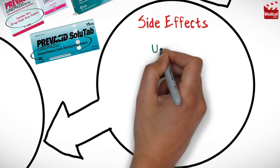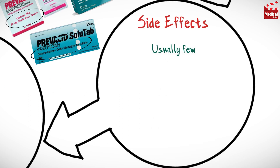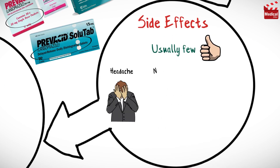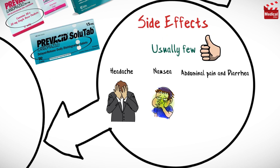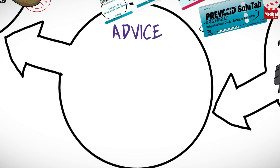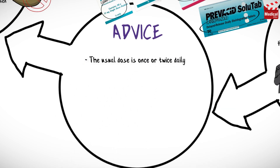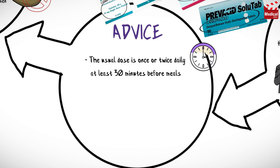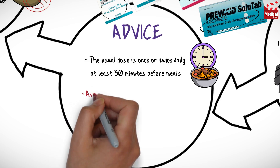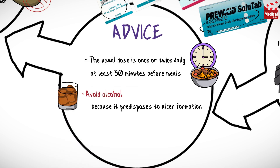Adverse effects are usually few but may include headache, nausea, abdominal pain, and diarrhea. The usual dose of lansoprazole is once or twice daily, taken at least 30 minutes before meals or once a day at bedtime.